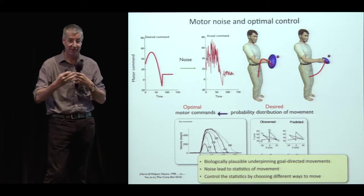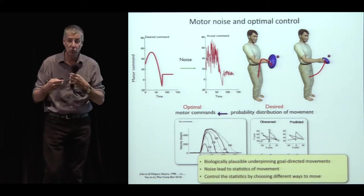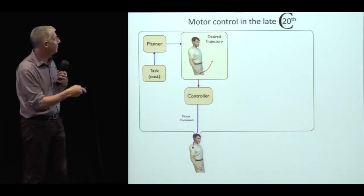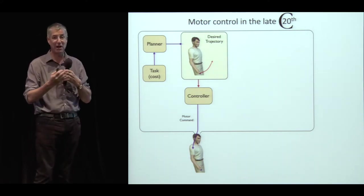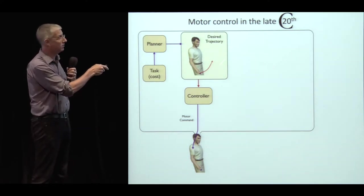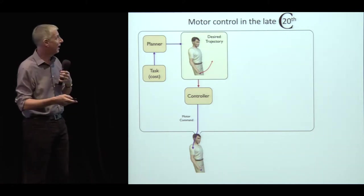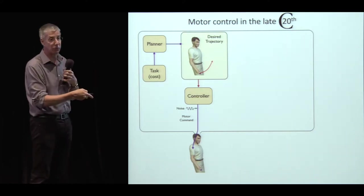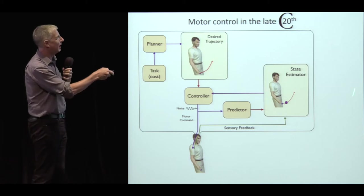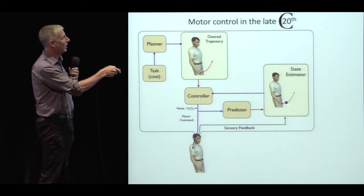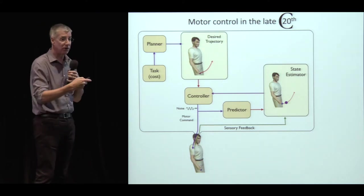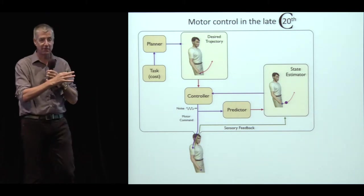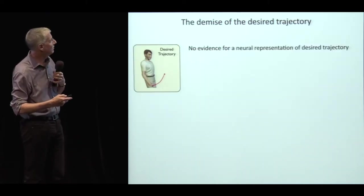At the end of the 20th century, the model was: a task leads to a cost, a planner specifies a desired trajectory to minimize variability, a controller enacts it with motor commands, noise causes drift, and a state estimator uses sensory feedback and prediction to compare actual to desired state and correct. This idea has largely vanished from our community. The desired trajectory is a slippery concept — people looked for the neural representation of the bell-shaped velocity profile for straight-line movements and couldn't find it.